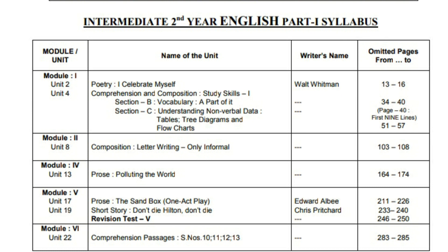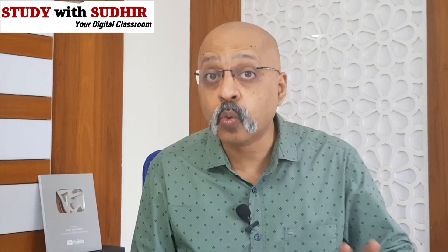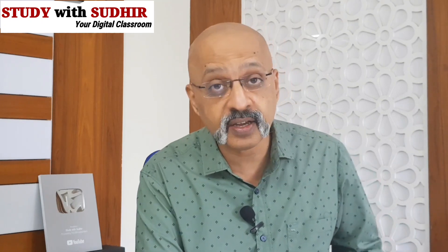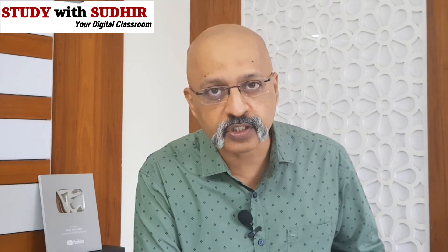So just like in 1st year, these four units — 'I Celebrate Myself', 'Don't Die Hilton Don't Die', 'Polluting the World', and 'The Sandbox' — have been left out of 2nd year Intermediate as well. Additionally, in Module 1, Unit 2, a part of vocabulary has been removed, and tables, tree diagrams, and flow charts have also been left out. In composition, for letter writing, only informal is required. I am putting this chart on the screen for you to see your new revised syllabus for Telangana Intermediate 1st and 2nd year. Thank you very much for watching.